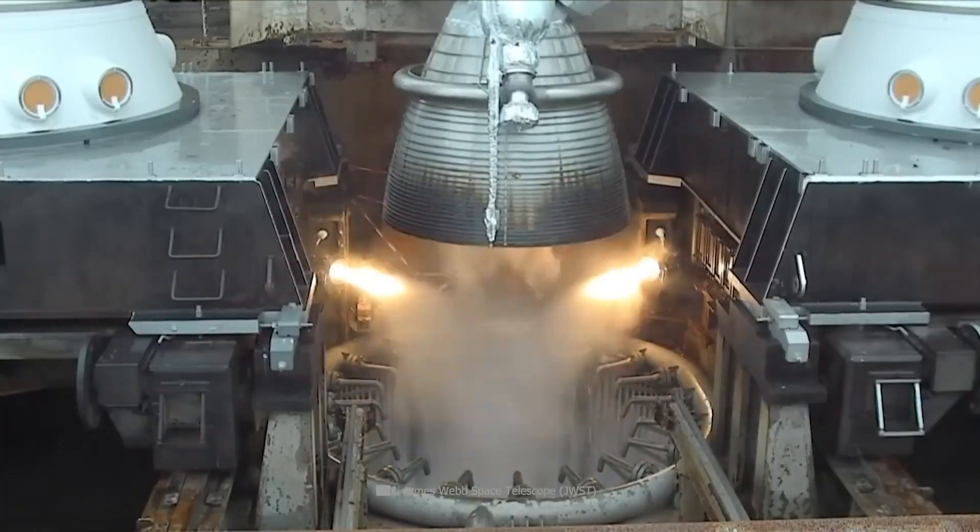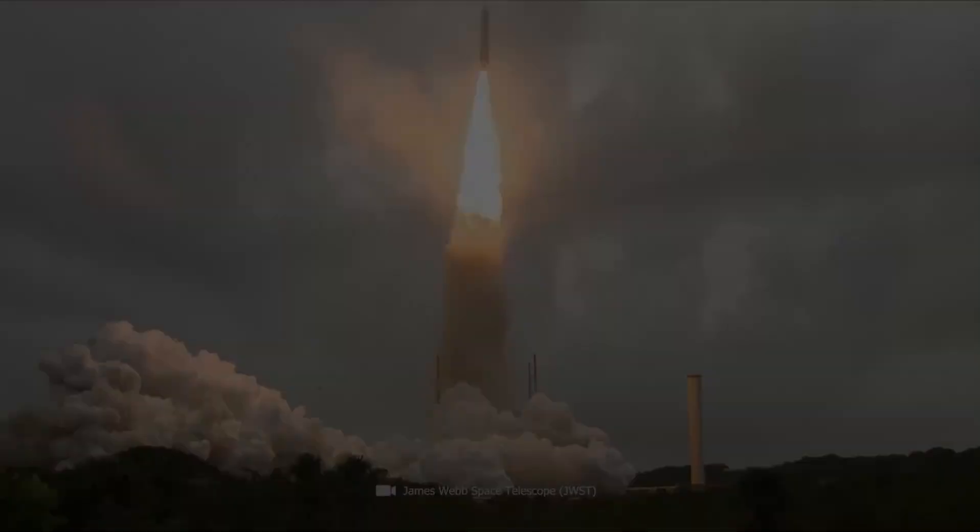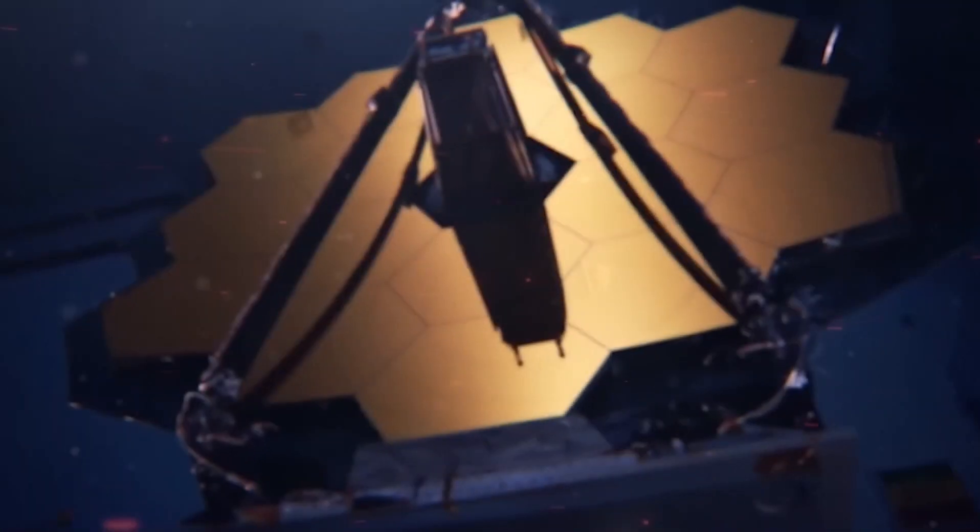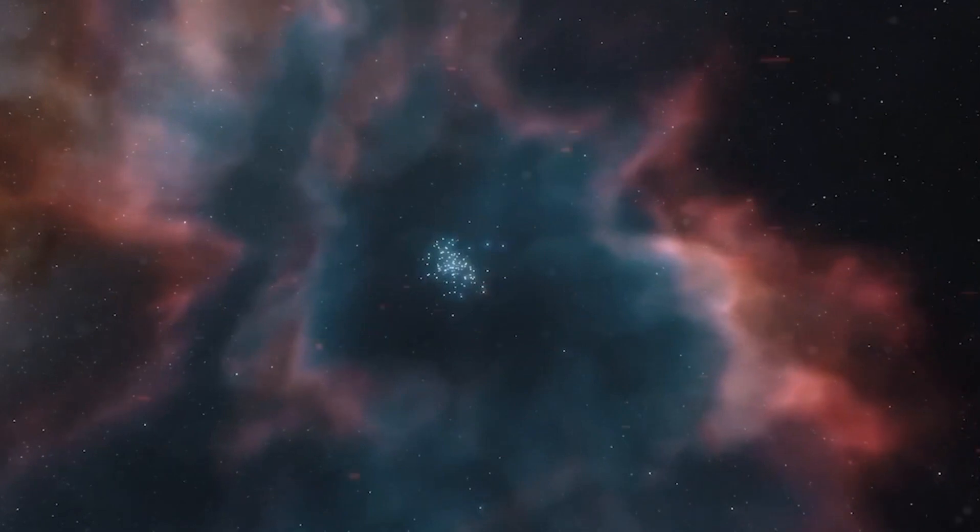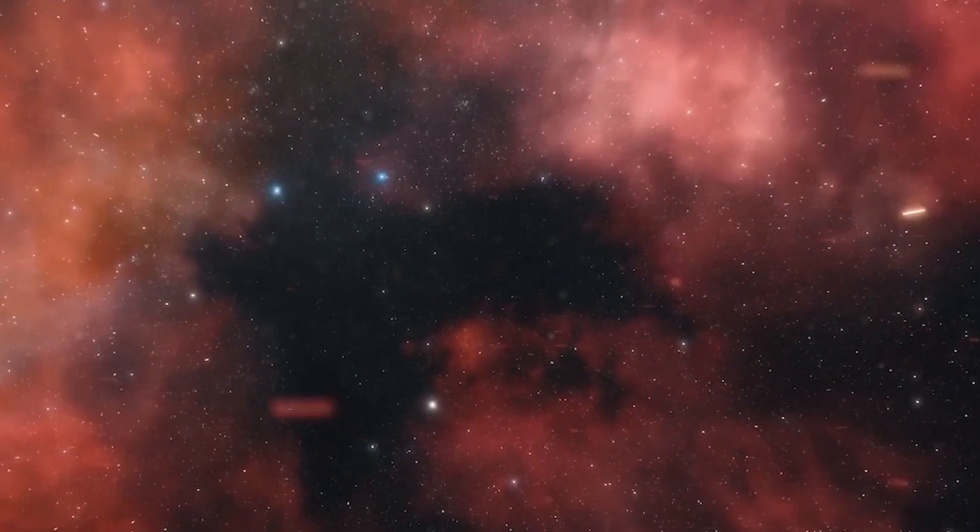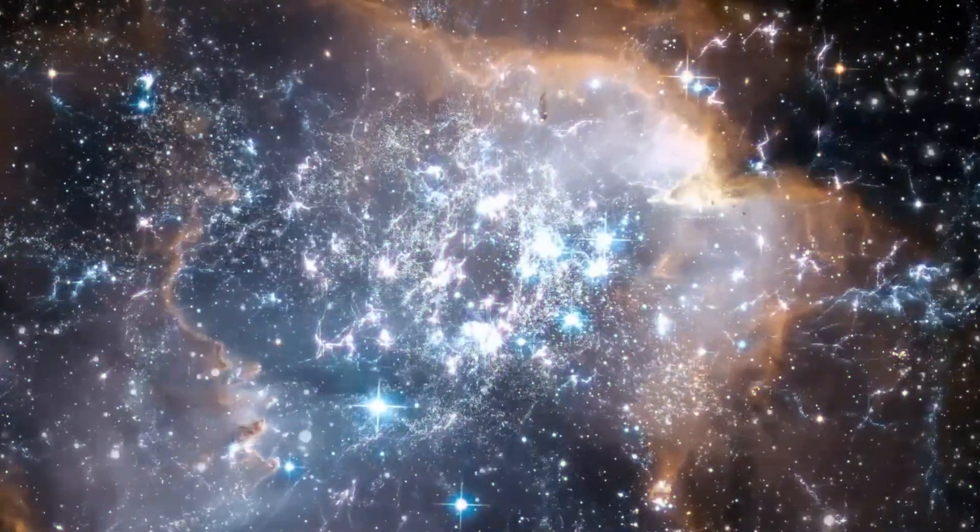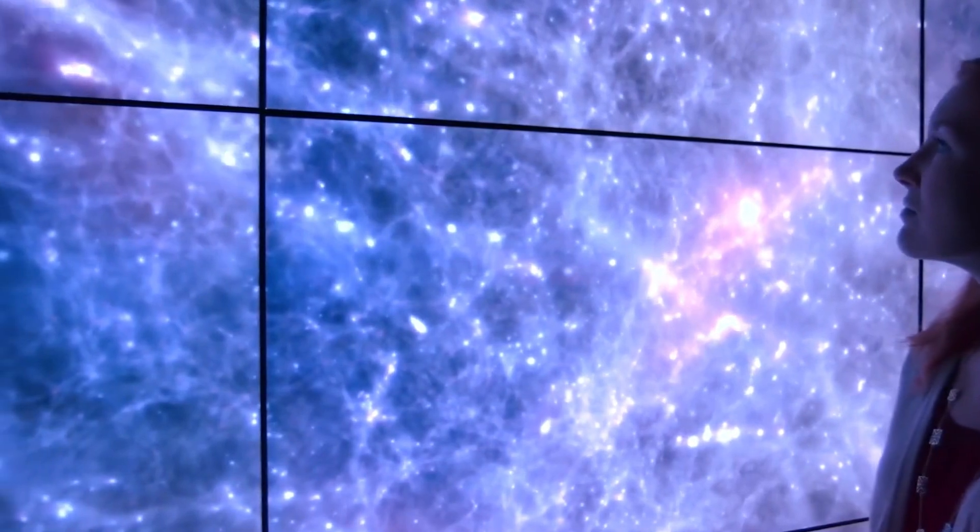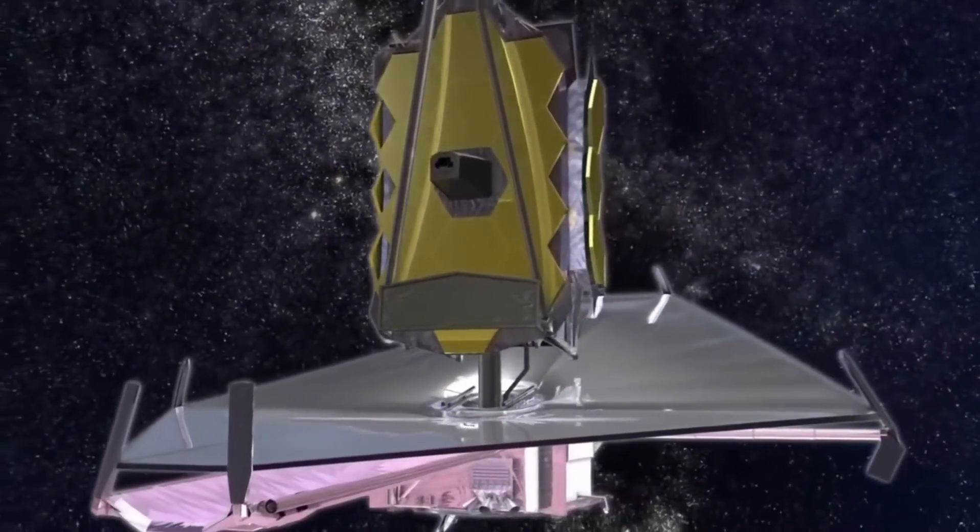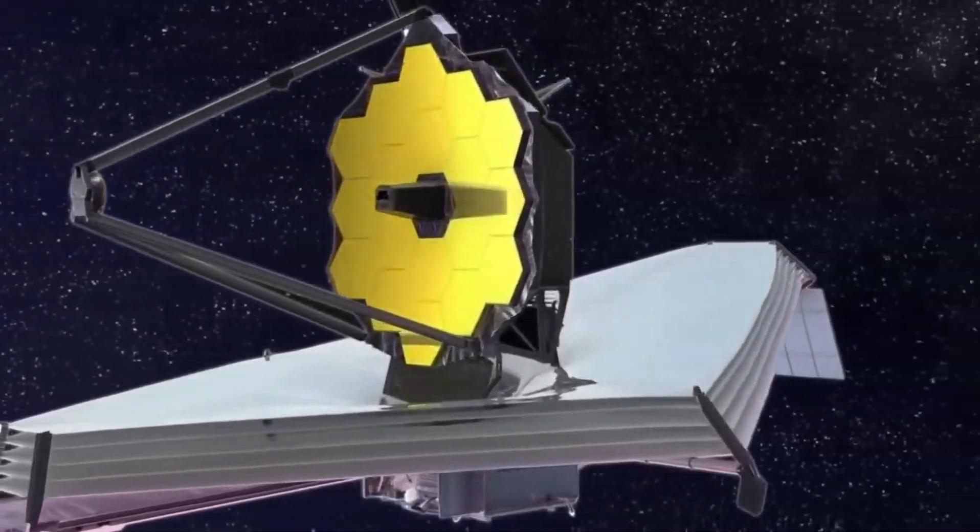A staggering 400 billion stars exist within our galaxy alone, and the visible universe hosts around 2 trillion galaxies. Our grasp extends to how the universe organizes itself into galaxy groups, clusters, filaments, and the vast cosmic voids that separate them. We comprehend the cosmic distances defining these structures and observe the evolving nature of the universe over time. This captivating narrative seamlessly aligns with the framework of the Big Bang and general relativity theory.